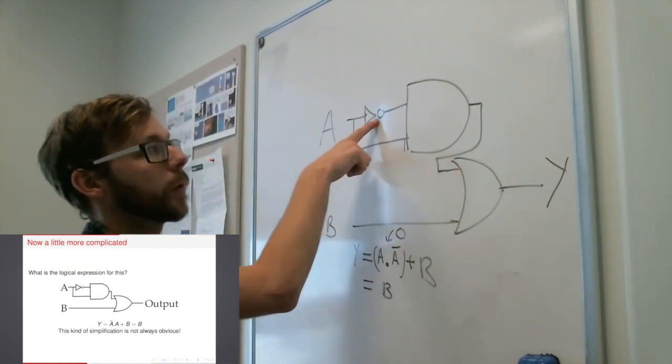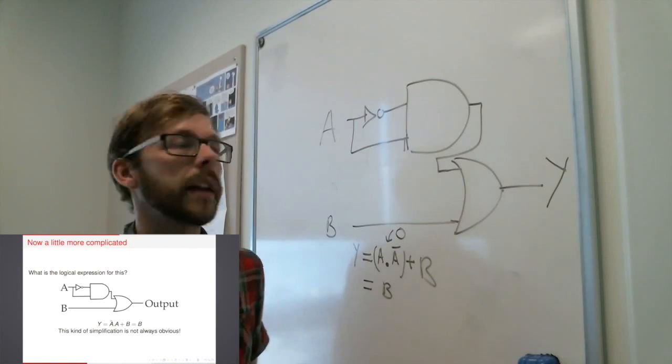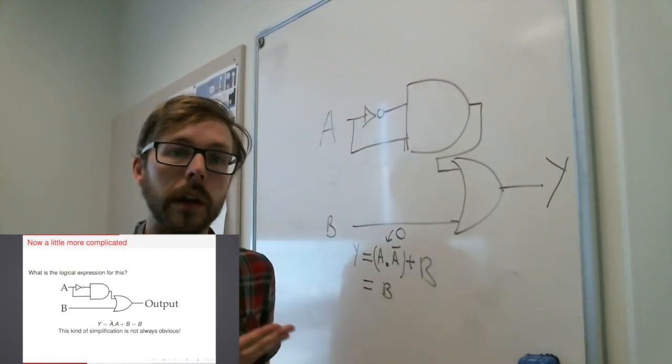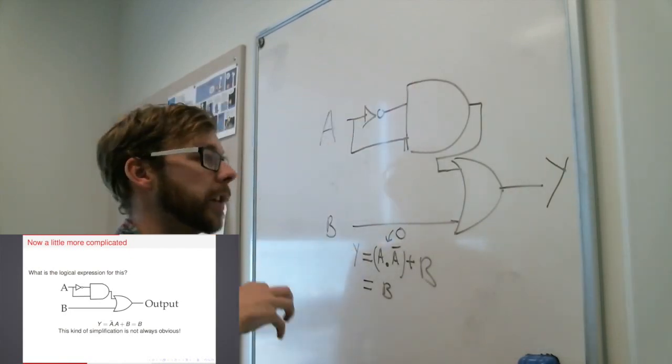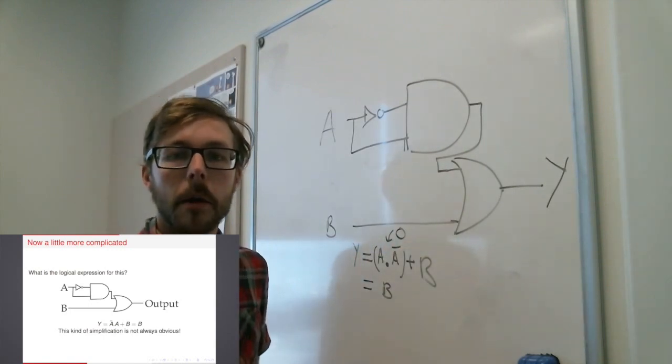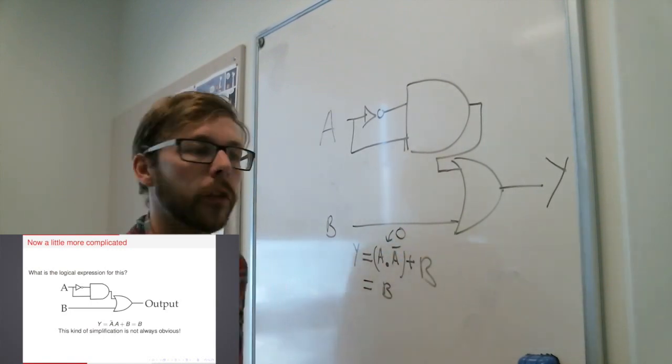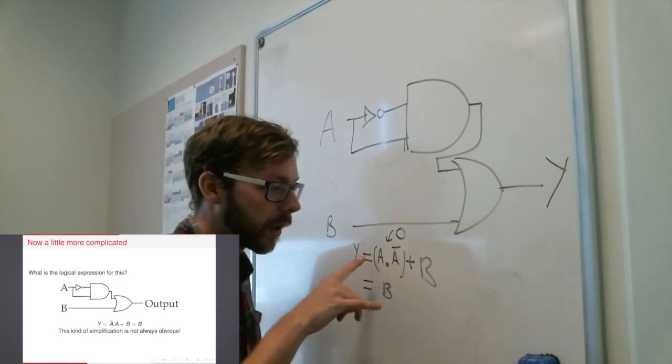So this kind of simplification is really, really useful, because it tells us we don't need that NOT gate, we don't need the AND gate, and anything else going into here is also irrelevant. This kind of simplification has implications for hardware. But it's not always super obvious.